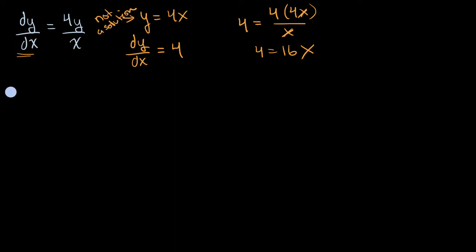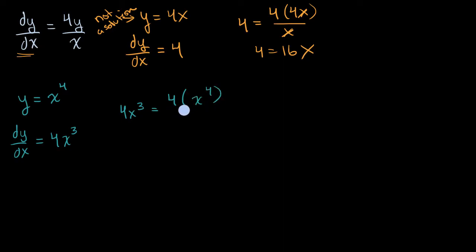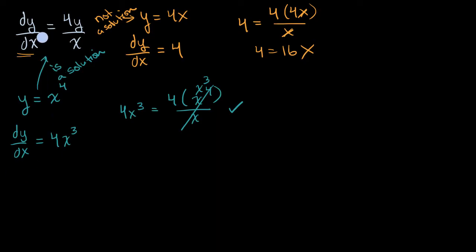Let's look at another equation. What about y is equal to x to the fourth power? Pause the video and see if this is a solution to our original differential equation. The derivative of y with respect to x, using the power rule, is four x to the third power. So we have to test: is four x to the third equal to four times y over x? Substituting y = x⁴: four times x to the fourth, divided by x, gives four x to the third. Indeed, four x to the third equals four x to the third — check. This is a solution, though not necessarily the only solution.